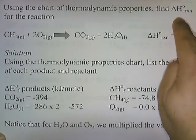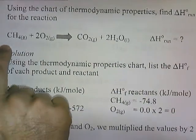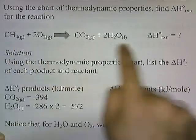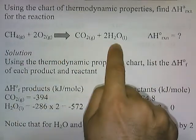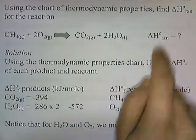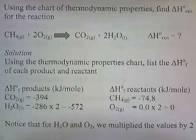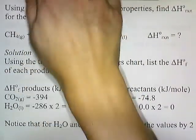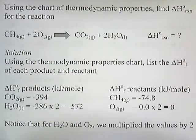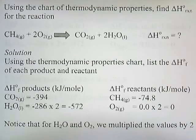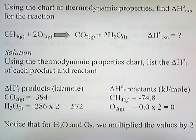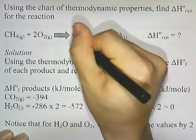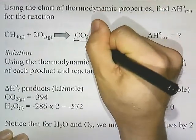Using the chart of thermodynamic properties, let's find the change in heat of reaction for the combustion of methane: methane reacts with oxygen to form carbon dioxide and water. How much heat is released or absorbed? We'll use the thermodynamic properties chart and list the heat of formations of each product and reactant.